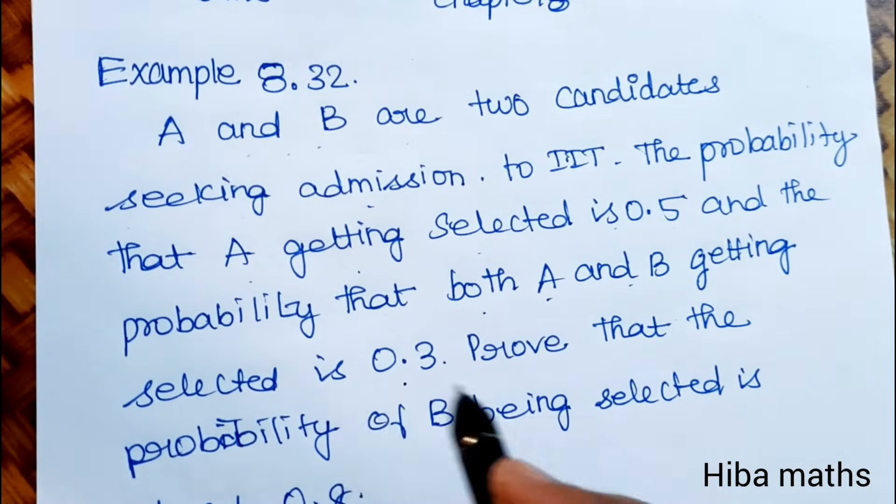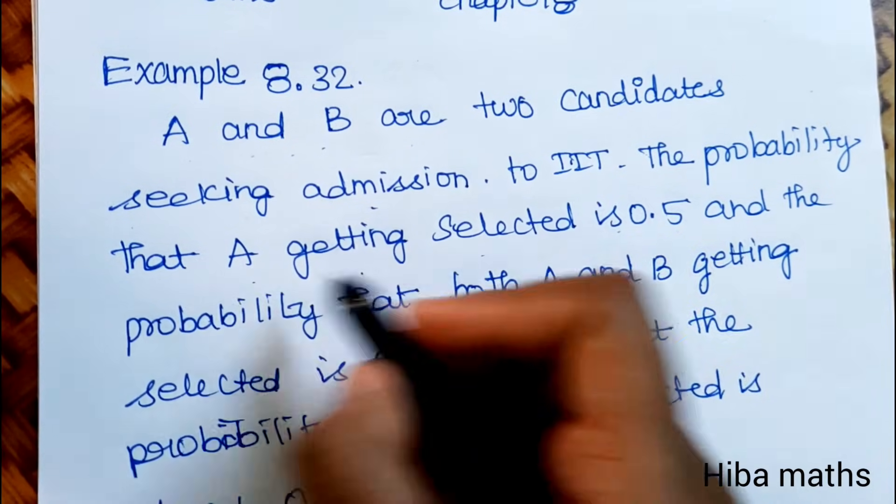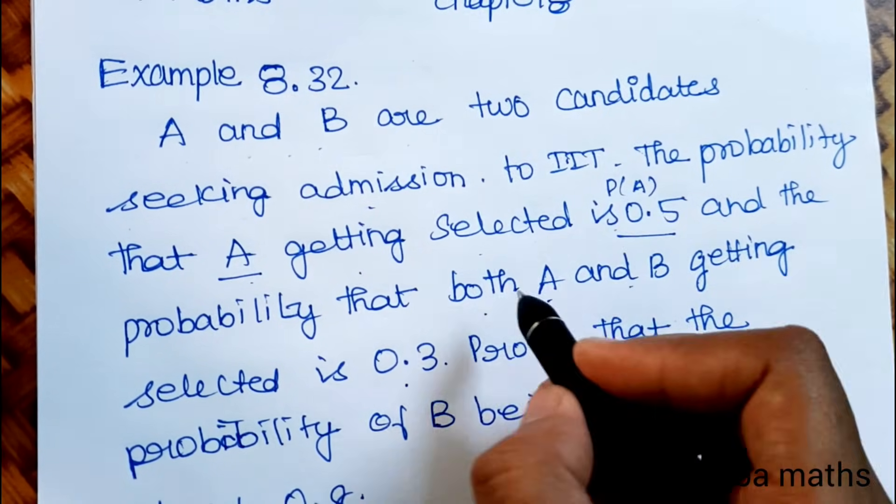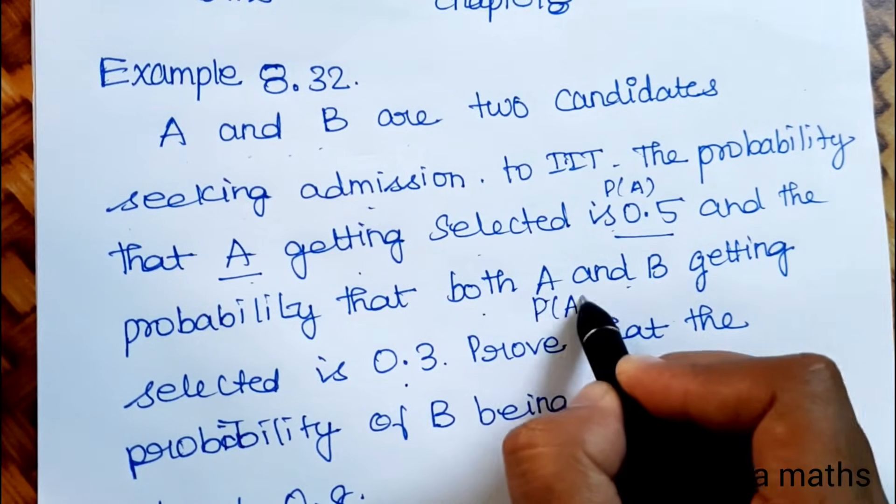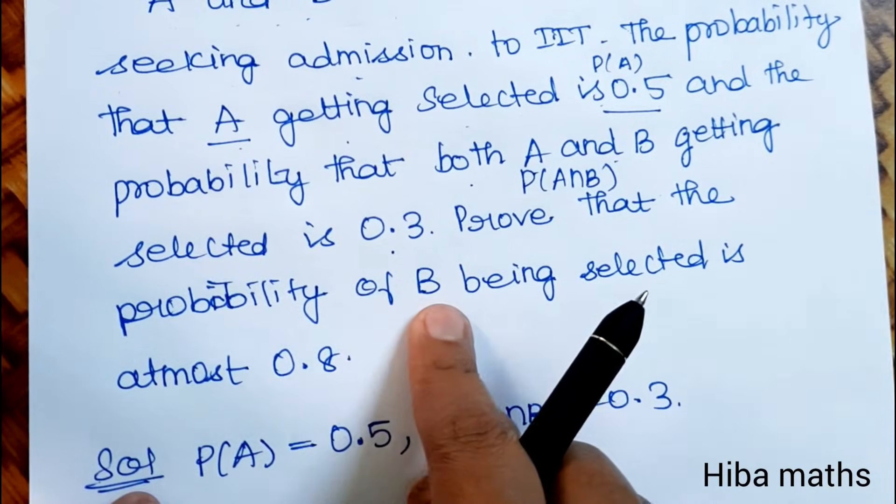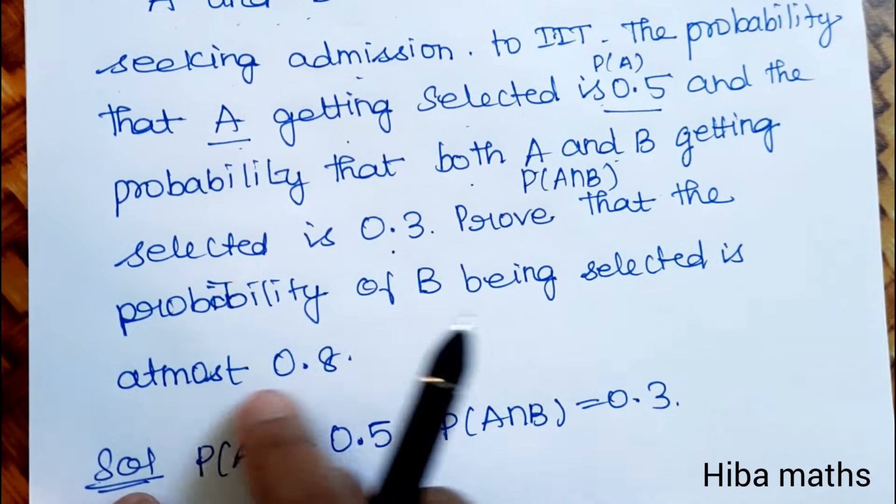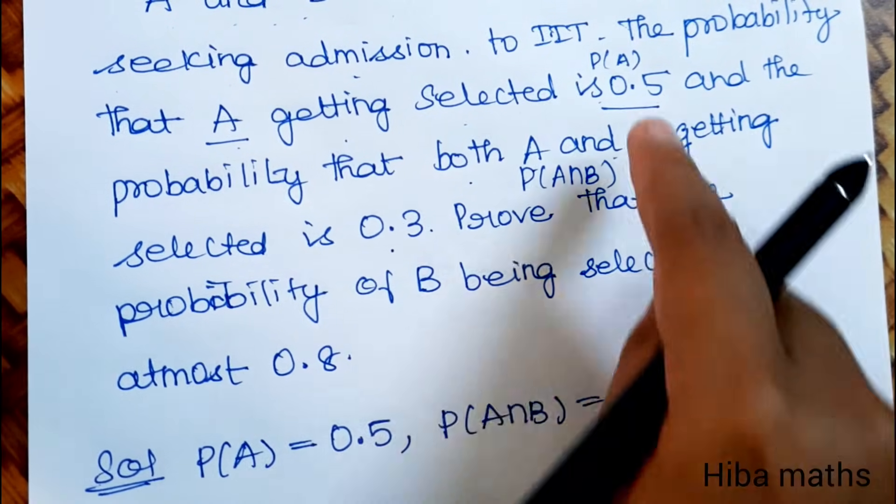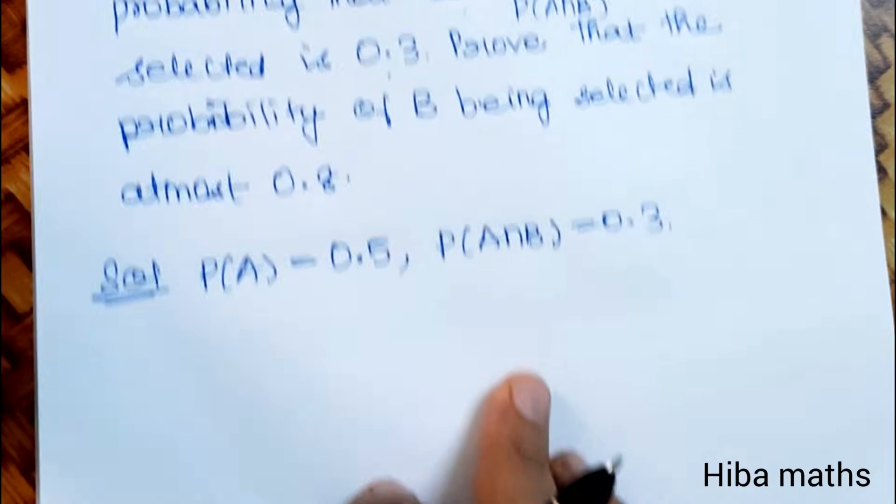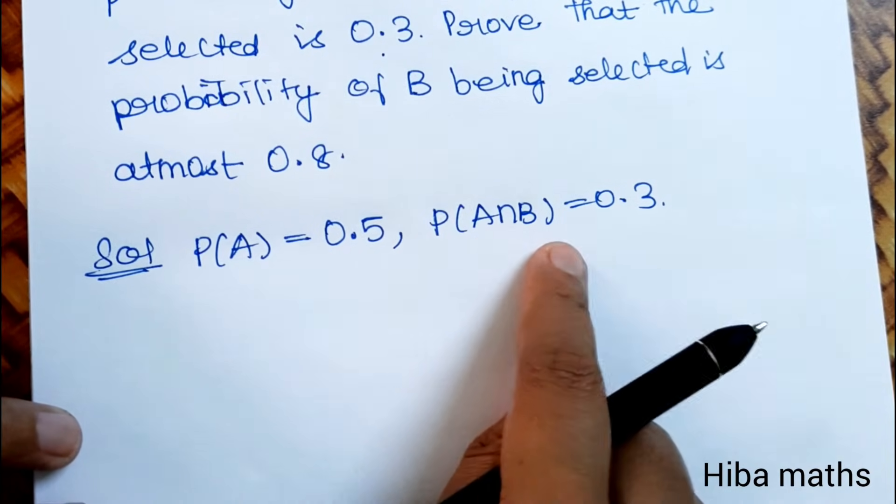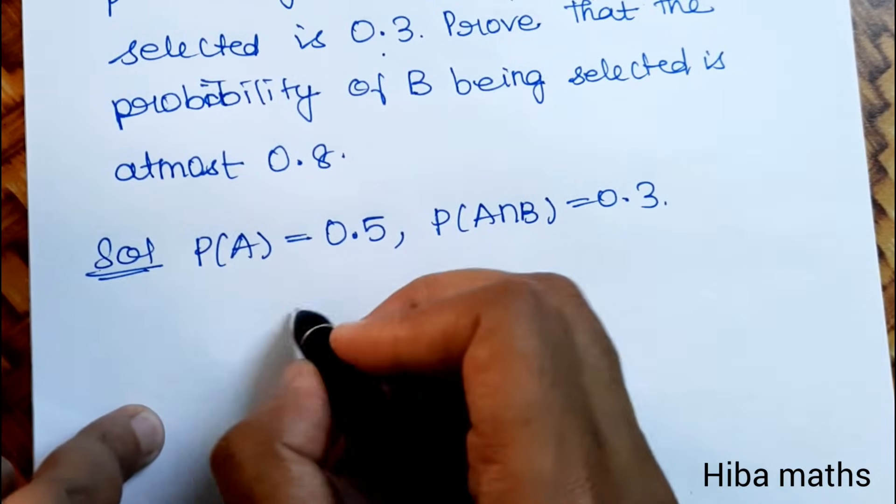So probability that both A and B getting selected is 0.3. The probability of B being selected is at most 0.8. So P(A) = 0.5, P(A∩B) = 0.3.